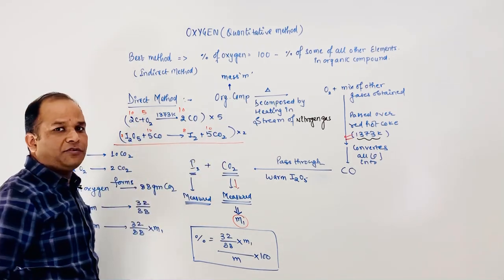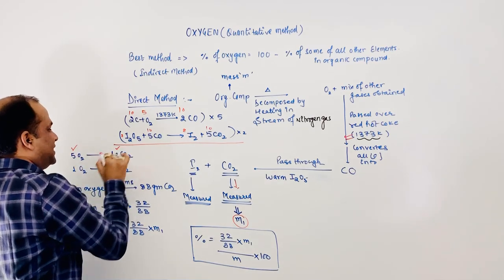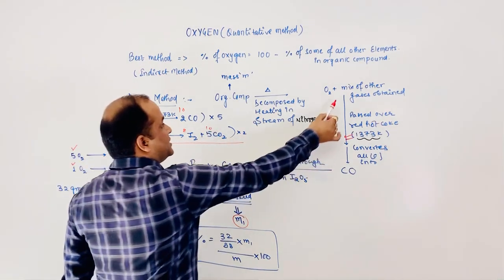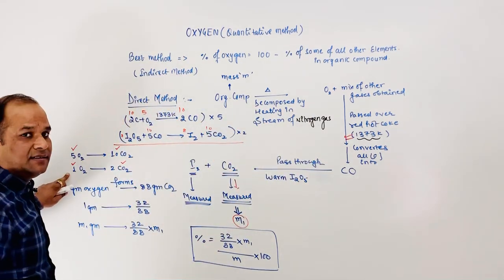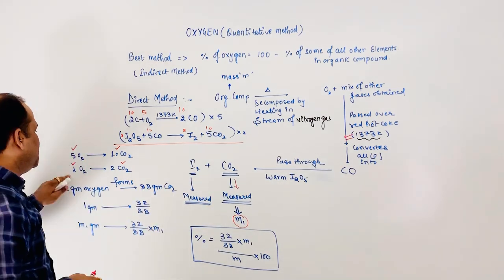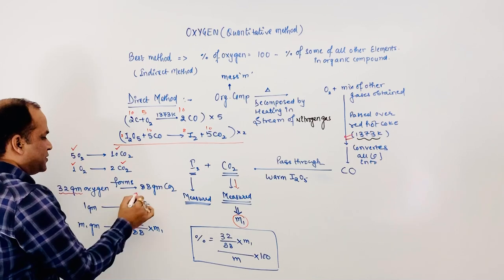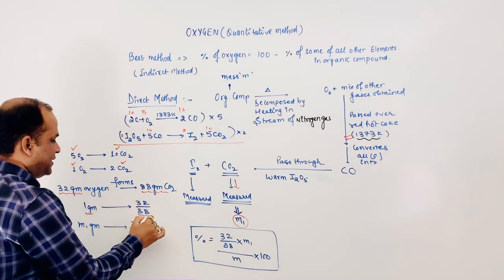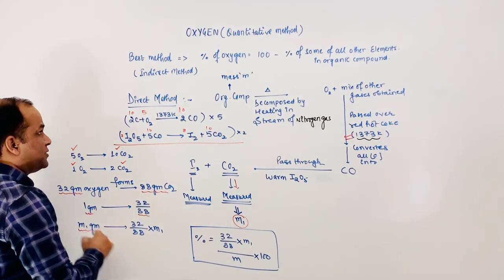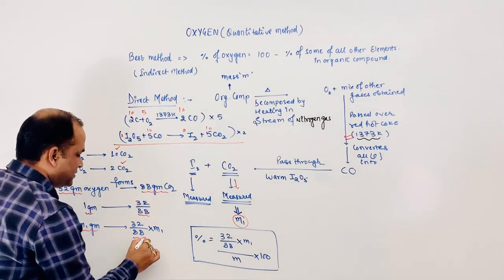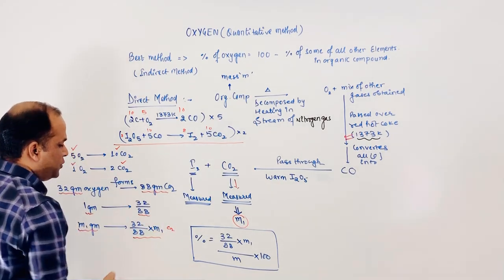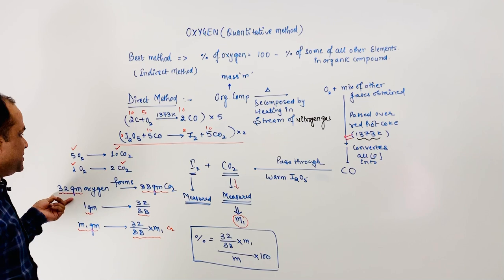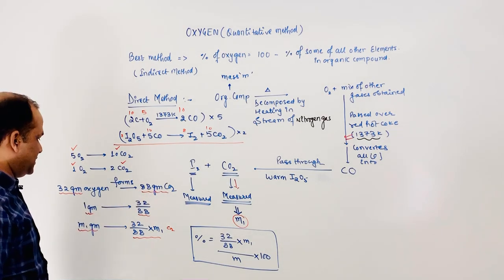Adding the balanced equations, the carbon monoxide cancels out. According to the balanced equation, 5 moles of oxygen gives 10 moles of CO₂, meaning 1 mole of oxygen gives 2 moles of CO₂. Therefore, 32 grams of oxygen forms 88 grams of CO₂.